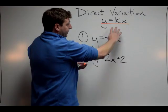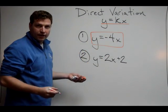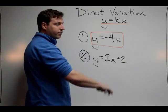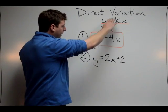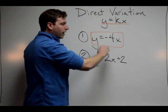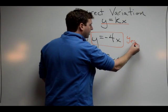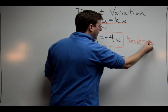So first, we want to make sure it's in this format. It looks as though this first example, y equals negative 4x, is already in this format. I can line up my y, my equal sign, my x's, and the only thing left, it looks like my negative 4 is right where my k would be. So for this one, I'm going to say yes, and my k equals negative 4.